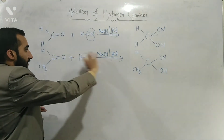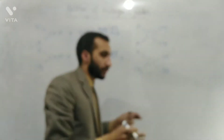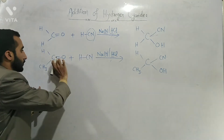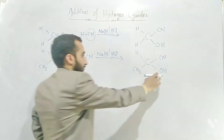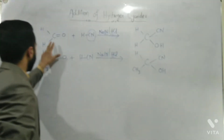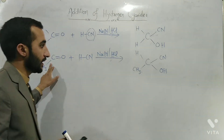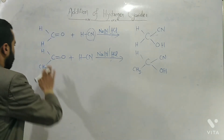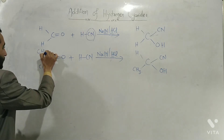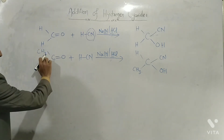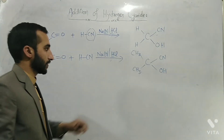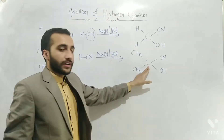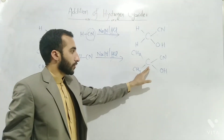Both NaCN and HCl are used as catalysts, and HCl is produced during the reaction. The cyano group attaches to the carbon, and oxygen gets a hydrogen attached, forming a hydroxyl group. If we use formaldehyde, acetaldehyde, or a ketone — for example, if we use acetone with a CH3 group — the product is named acetone cyanohydrin or propanone cyanohydrin.